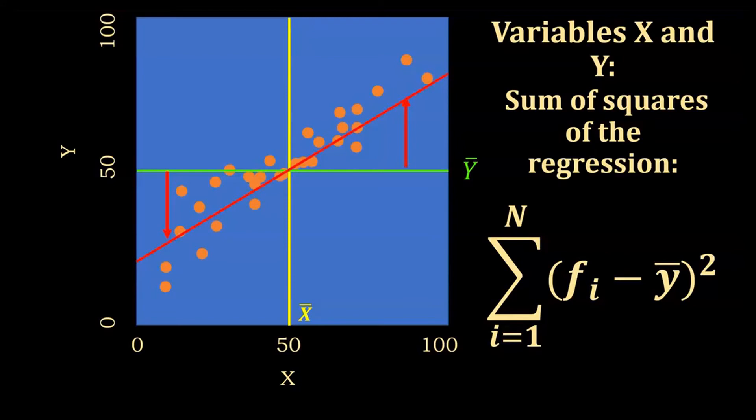So now, for each value of X in the variable X, we are going to find, using the function f, what value corresponds to Y. And that, we are going to subtract from the mean. And again, we are going to obtain a square of those values. And we do that 30 times, and then we sum all these values. So that gives us an idea of how far the regression line is from the mean of Y.